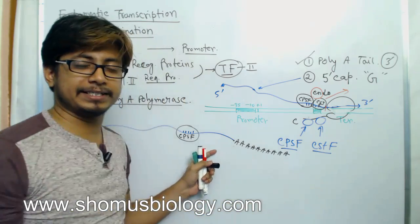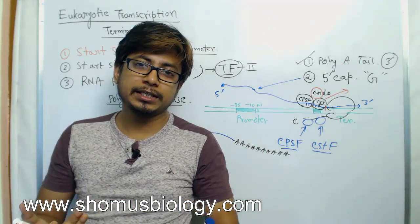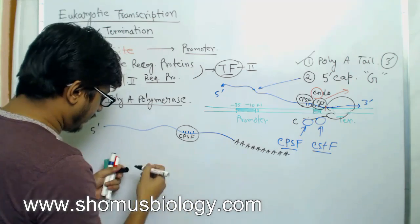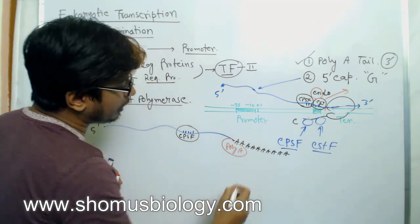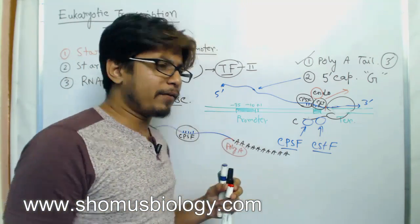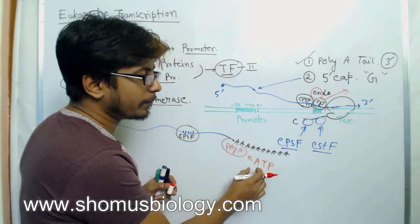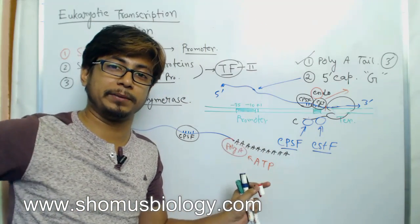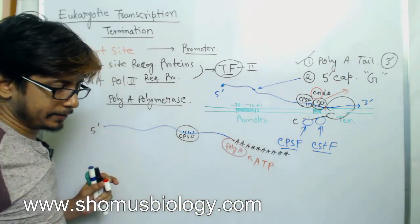Poly-A polymerase is a very interesting enzyme because it can attach multiple adenine residues at the end of the cleaved mRNA without needing any template. RNA polymerase and DNA polymerase always need a template, but poly-A polymerase does not. It starts adding multiple adenine residues at the end, getting the adenine from ATP — so if it needs to attach 200 adenines, it will use 200 molecules of ATP.